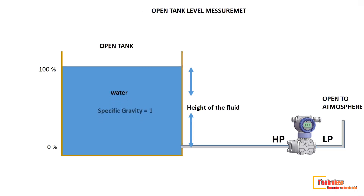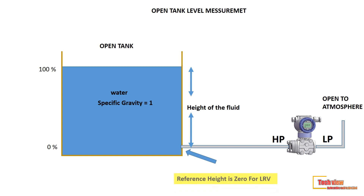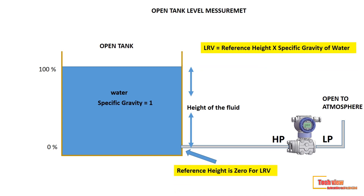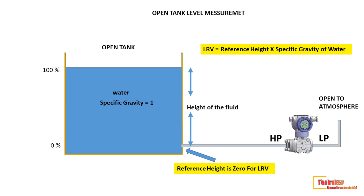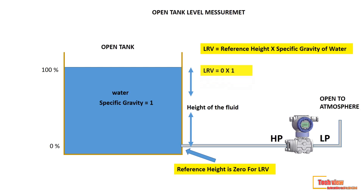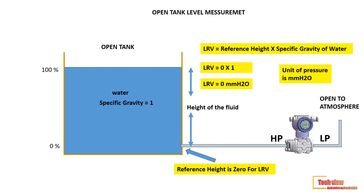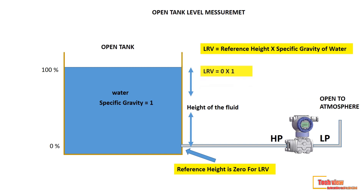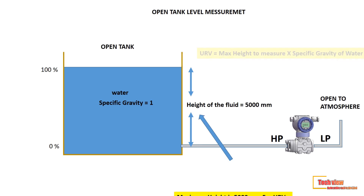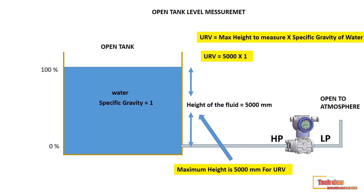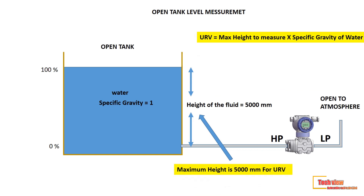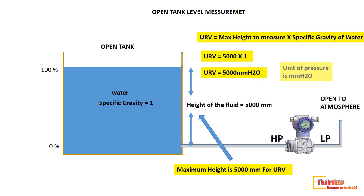This tank is used for water storage, so the specific gravity of water is 1. For the lower range value, the reference height is the tapping point of the transmitter, taken as zero millimeters. As per the equation, LRV equals height times specific gravity — so zero times one — meaning LRV is 0 mmH₂O. For URV, we take the maximum height the tank can fill, assumed here to be 5000 millimeters. Therefore URV equals 5000 times 1, giving a URV of 5000 mmH₂O.